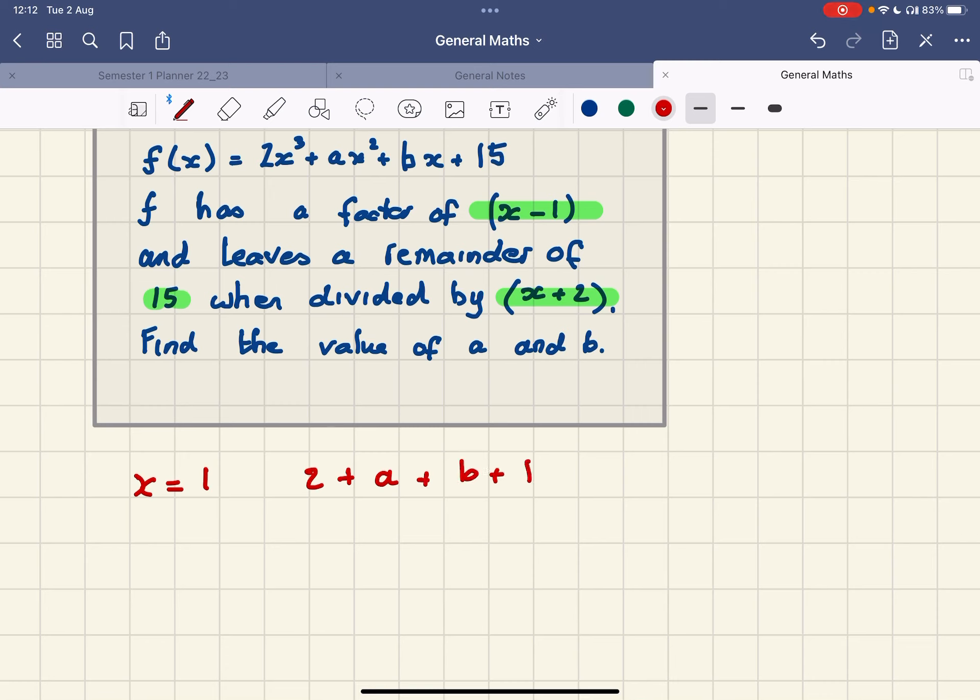And because it's a factor it equals 0, so that's a plus b equals negative 17. So I've got two unknowns, so obviously this is a simultaneous equation.